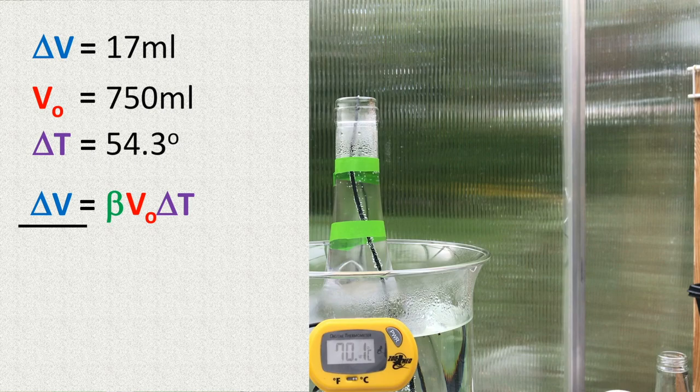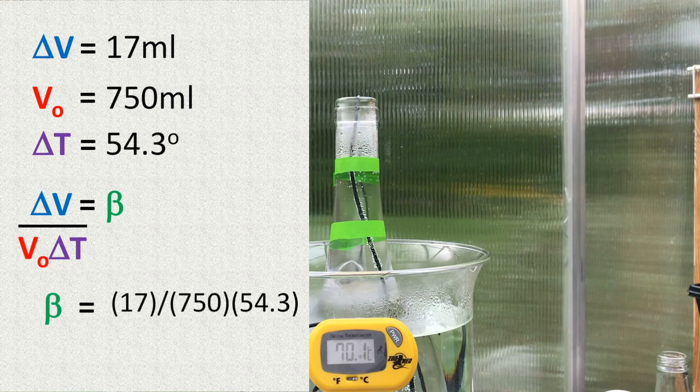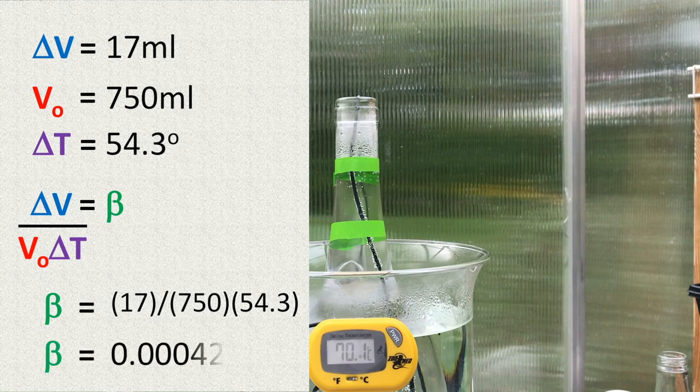To find the coefficient of thermal expansion, we need to do a little algebra and rearrange, and then plug in our numbers. And we get a coefficient of thermal expansion of .00042 per degrees Celsius.